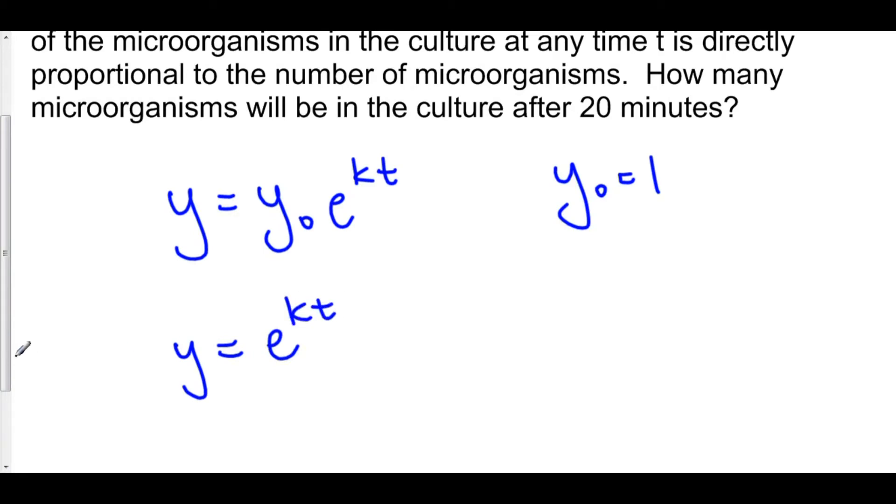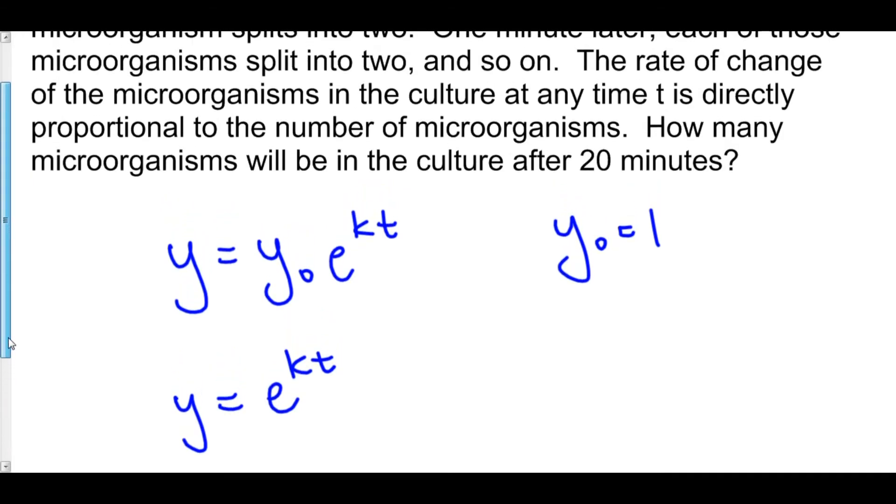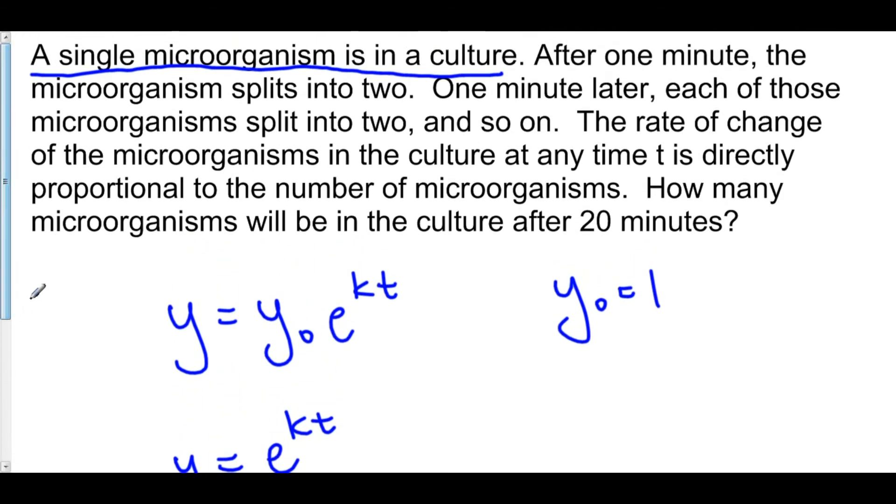Now we need to solve for k. And the way that we can do that is by finding another function value at any time. Well, we know that after 1 minute, the microorganism splits into 2. So when t is equal to 1, y is equal to 2. There are 2 microorganisms at the time when t is equal to 1, and 1 minute has gone by.